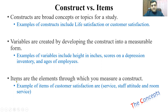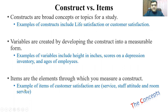So what are items? Items are the elements through which you measure a construct. As we said, a construct is a broad concept or a general topic of study, like life satisfaction and customer satisfaction. But how do we measure it? We measure a construct with the help of certain questions or statements that are known as items. Examples of items for customer satisfaction are service, attitude, and room service.